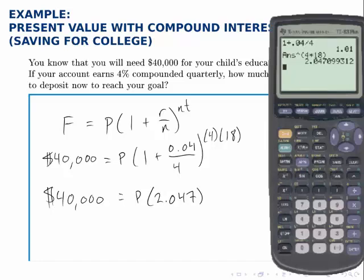Again, though, I'm not going to type in 40,000 divided by 2.047, because that might introduce some small rounding errors. Instead, I'll let the calculator keep that full answer. So I'll type in 40,000 divided by, and then I look for the answer key, which is the second function on the negative button. So I hit second, answer, 40,000 divided by the answer, and that tells me that the present value P is $19,539.84.